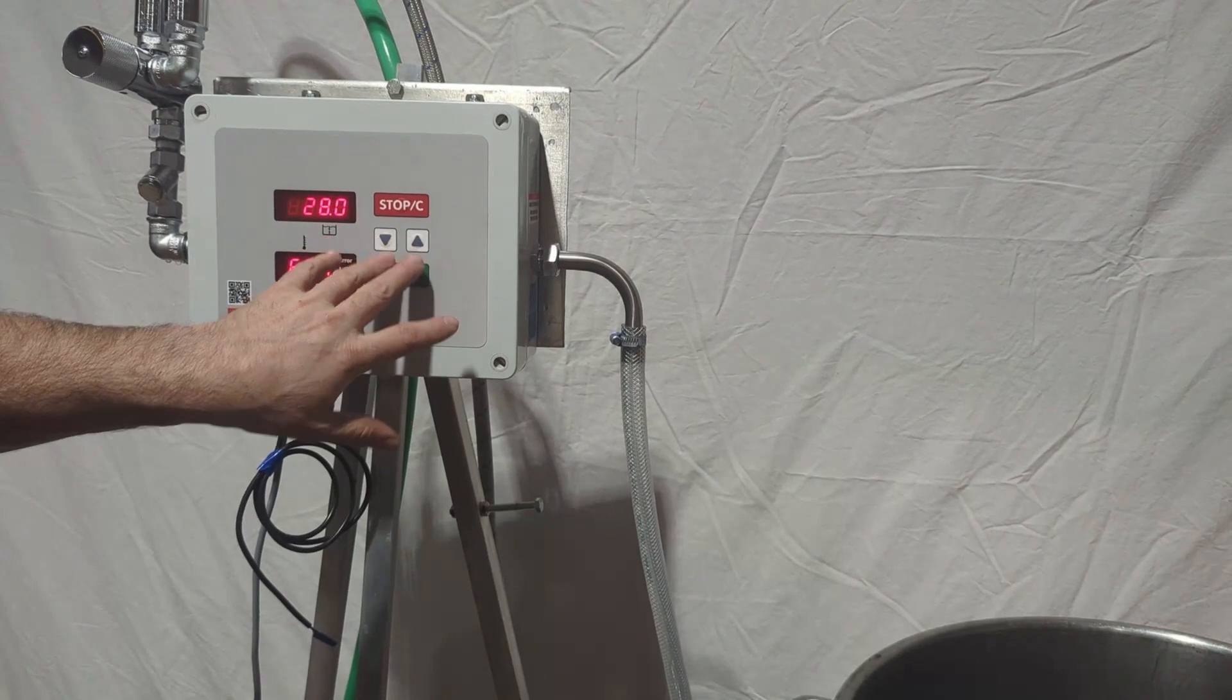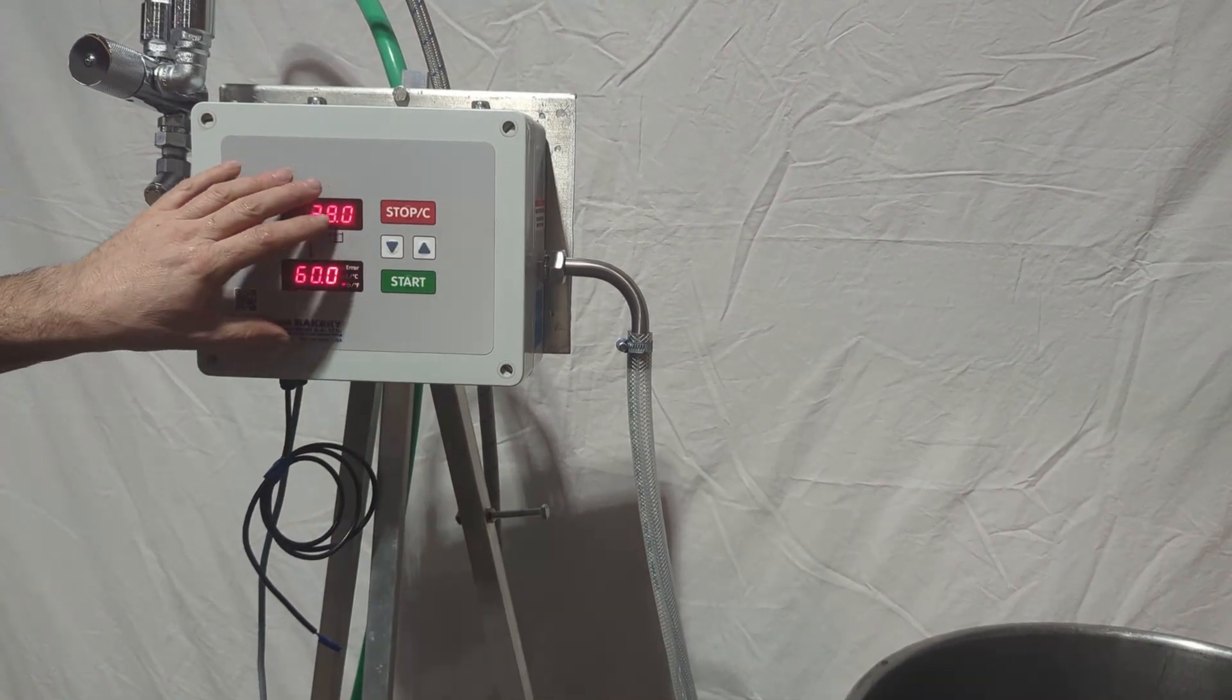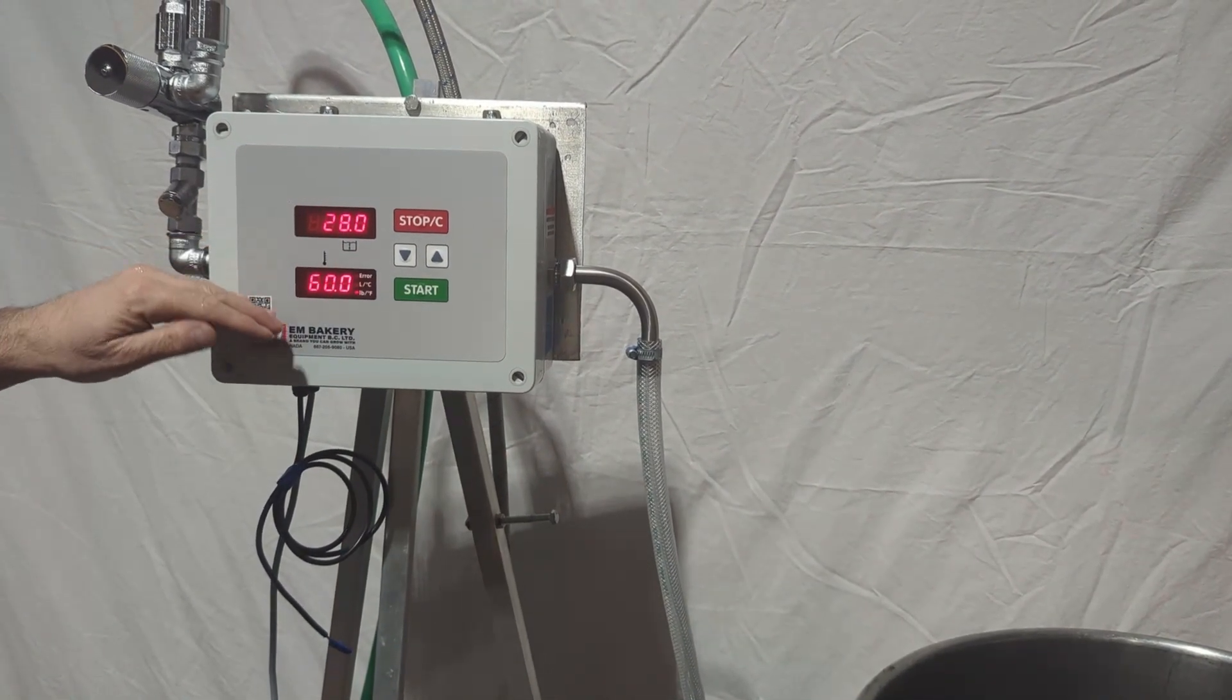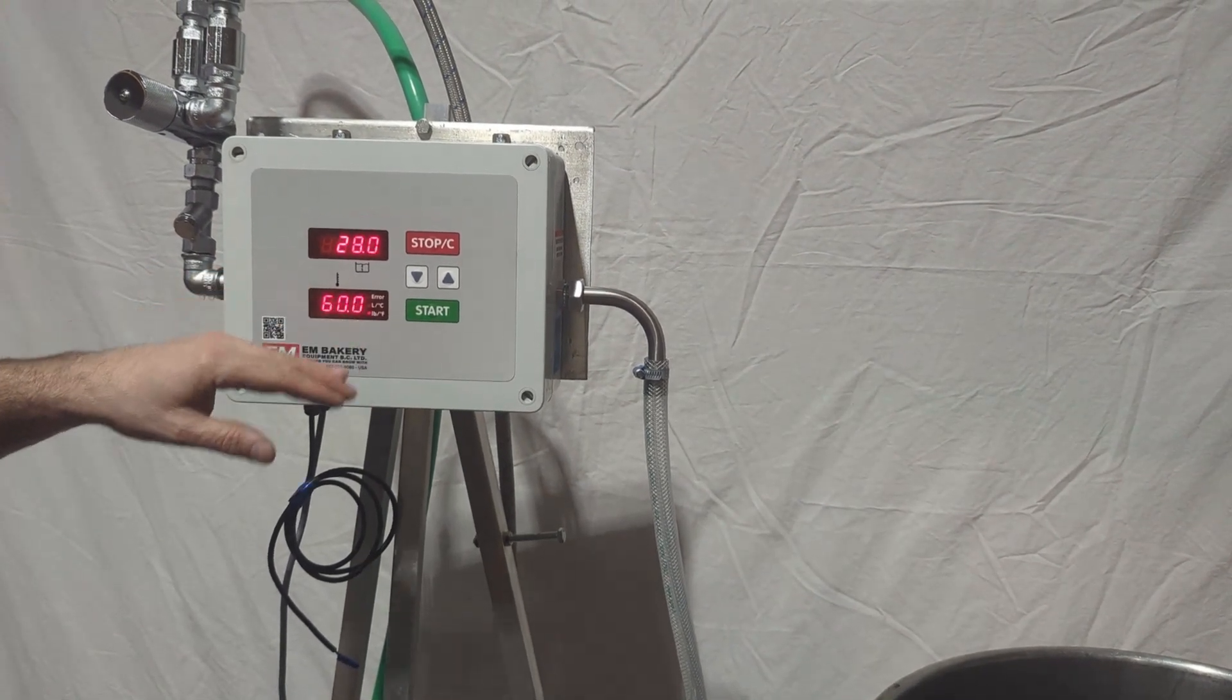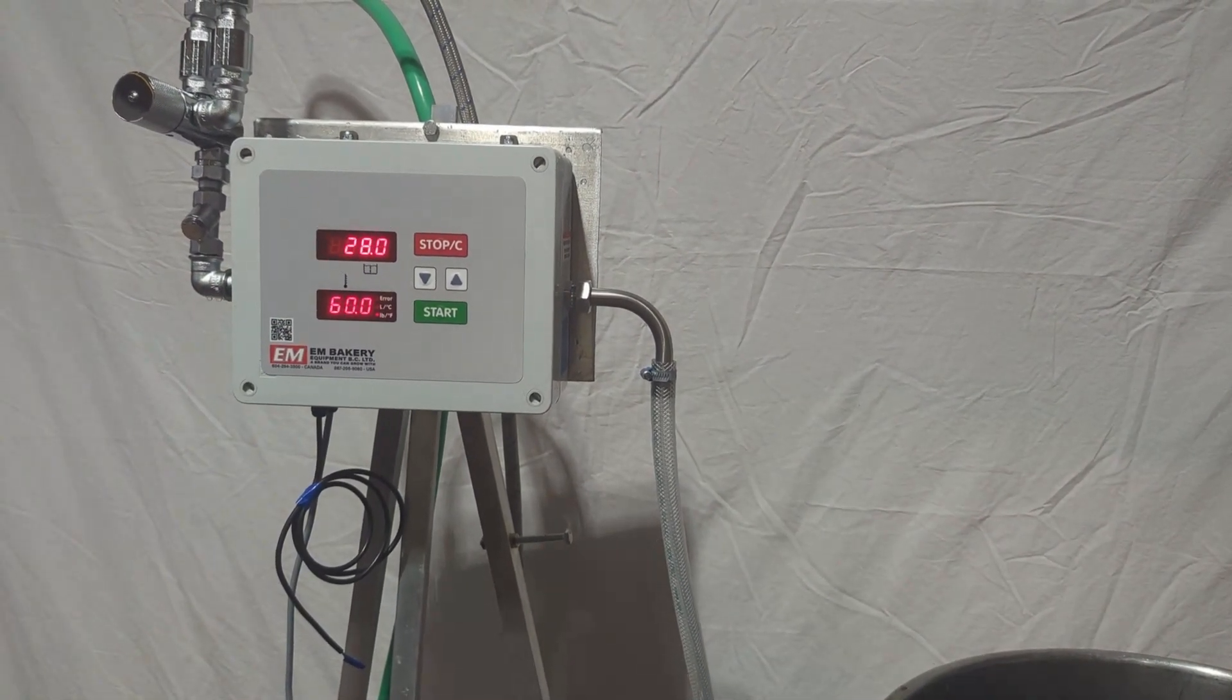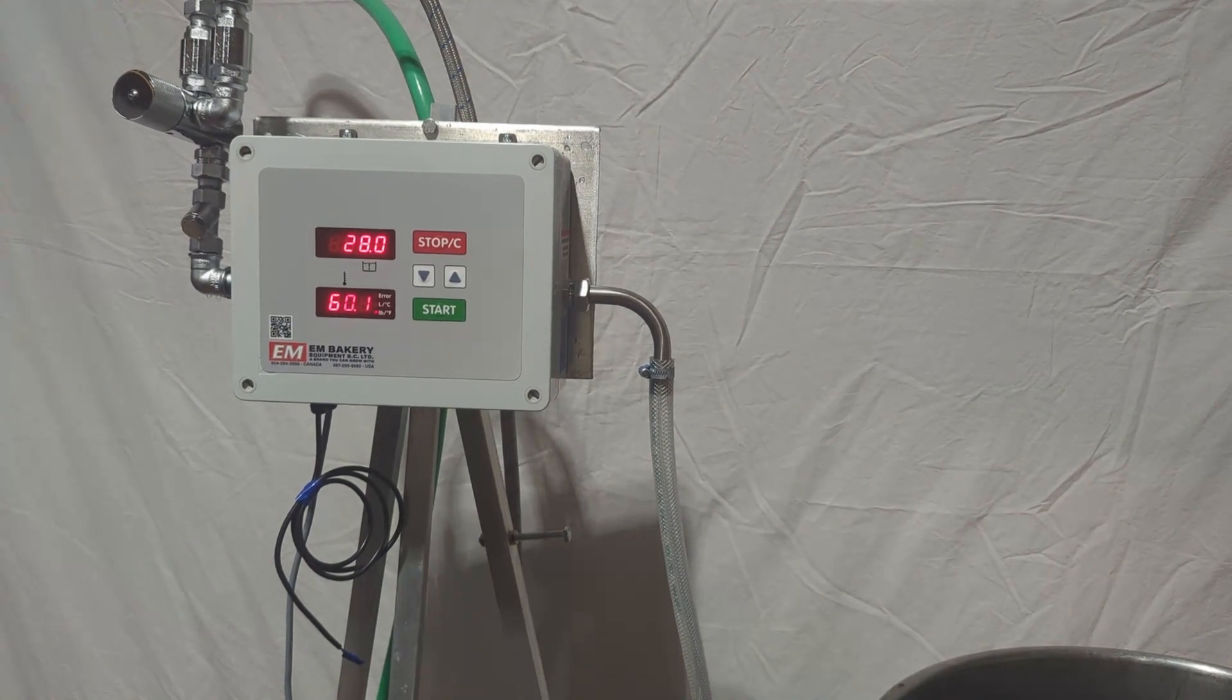You can go pressing both buttons, you can go into internal settings and set it for pounds and ounces or liters and Celsius, or pounds and ounces and temperature Fahrenheit. Thanks for watching. I'm Mark from EM Bakery Equipment.